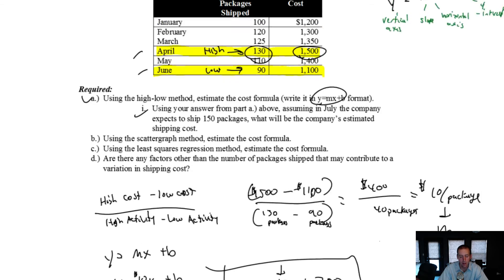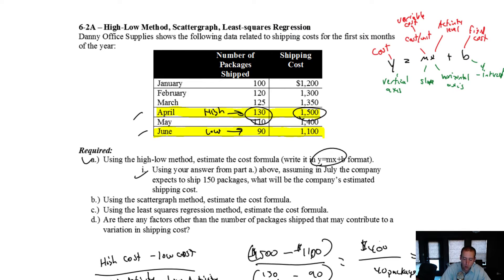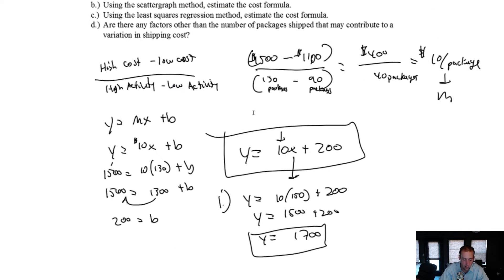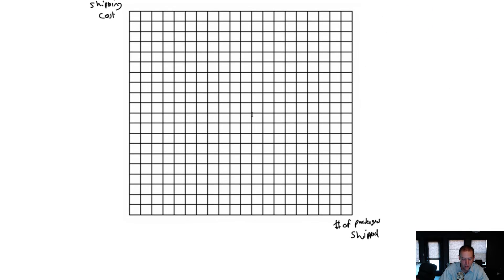Something I like to do is measure up my axis. I know the maximum number of packages shipped is 130. I've made a 20 by 20 grid. I'm going to take the first 13 lines and say each one is 10, so: 10, 20, 30, 40, 50, 60, 70, 80, 90, 100, 110, 120, and 130. That's all I'm going to need.